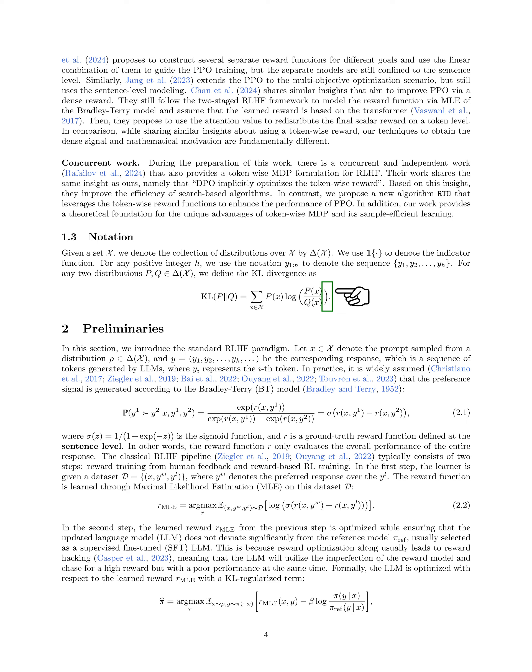The KL-regularized target also ensures that the framework allows for a stochastic optimal policy. The policy optimization step is typically done using the proximal policy optimization, PPO, algorithm, which requires a reward signal at each step. Existing implementations of PPO assign the sentence-level reward to the last token, but sparse rewards can make learning more challenging. This motivates us to provide a framework with more fine-grained token-wise characterization to enable the use of token-wise rewards in RLHF.